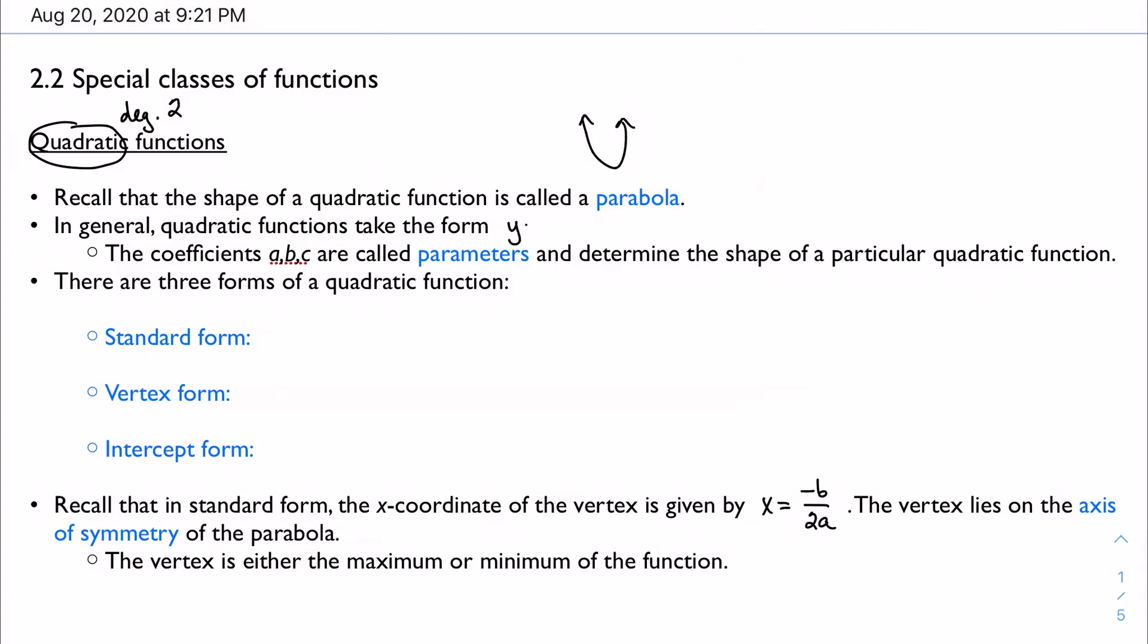So I want a polynomial of degree 2. So my general form is just to say ax squared plus bx plus c. And of course, my coefficients have to be real numbers, and my leading coefficient cannot be 0. If my leading coefficient was 0, then I wouldn't have a quadratic function, I would just have a linear function.